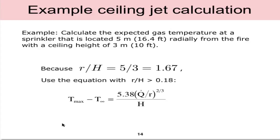Let's use that in an example. Here we're asked to calculate the expected gas temperature for a sprinkler that's located five meters radially away from the fire in a room with a ceiling height of three meters. Because r over h equals five over three, that ratio is 1.67, we should use the equation where r over h is greater than 0.18 and that's this equation here.